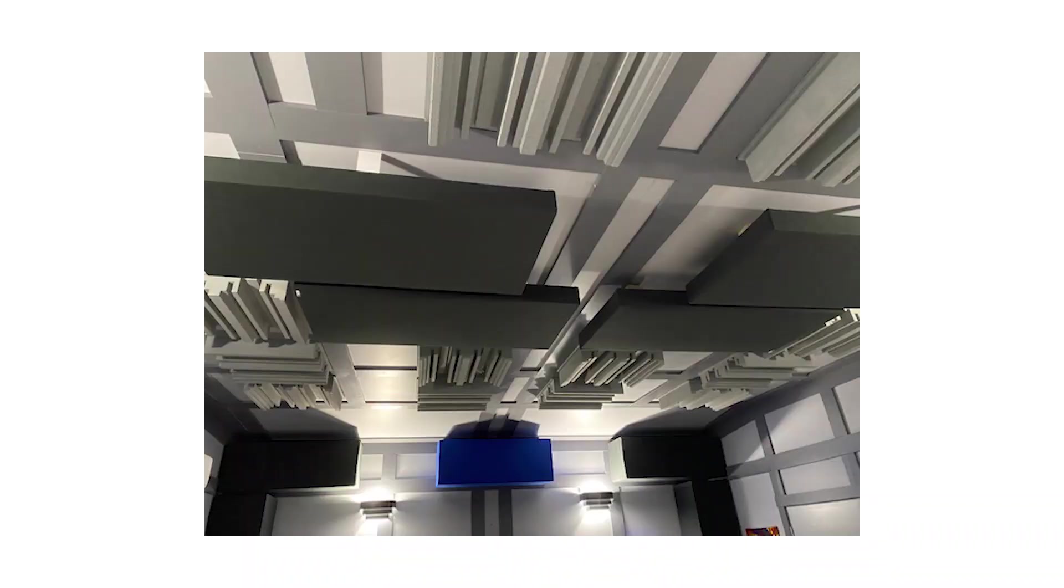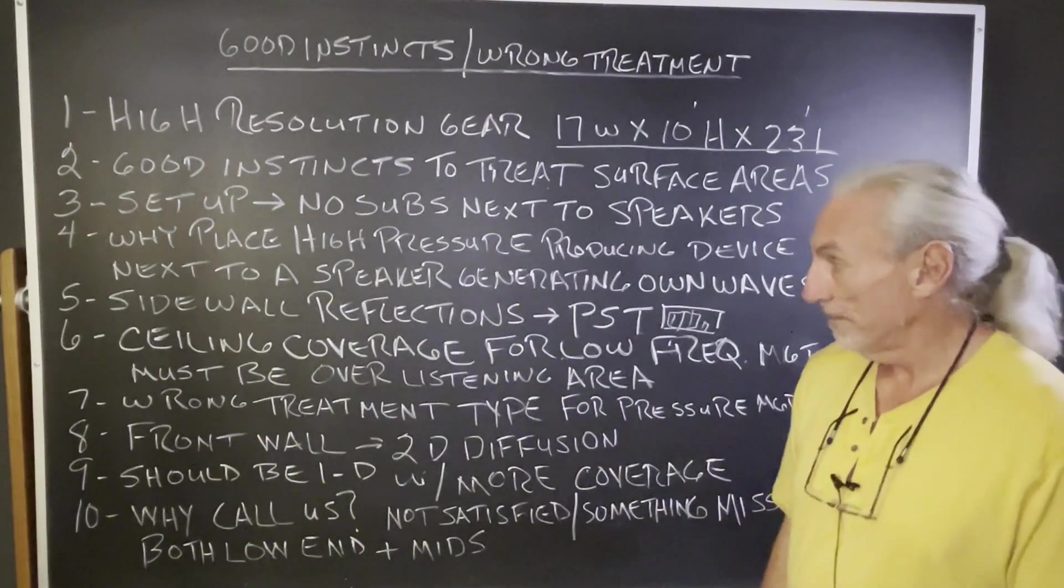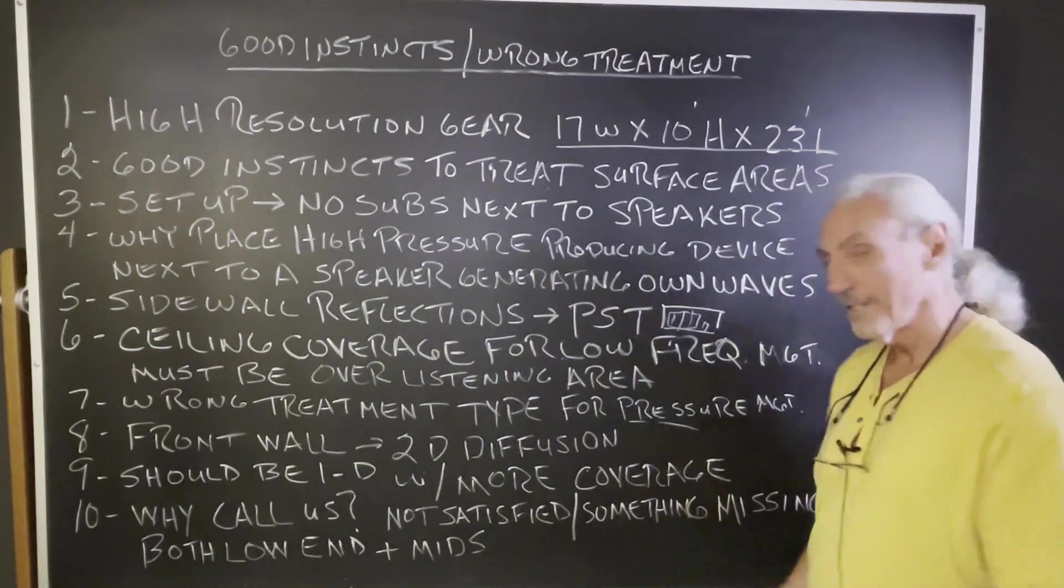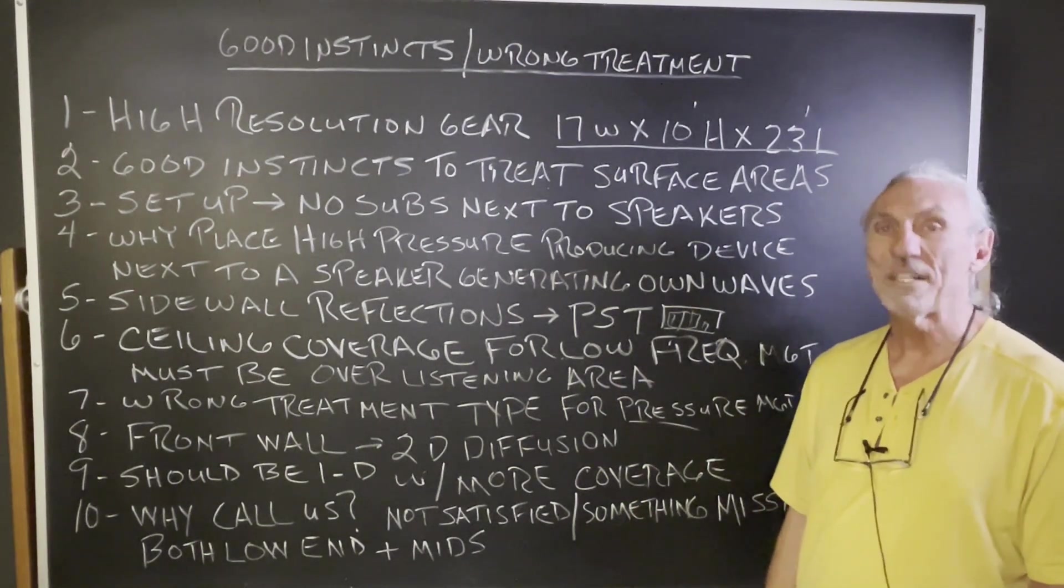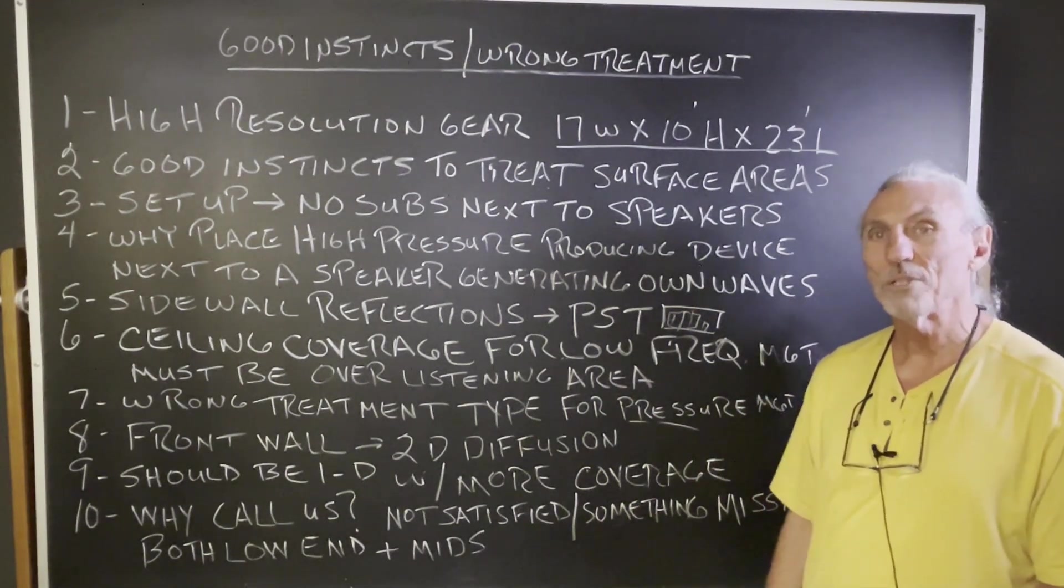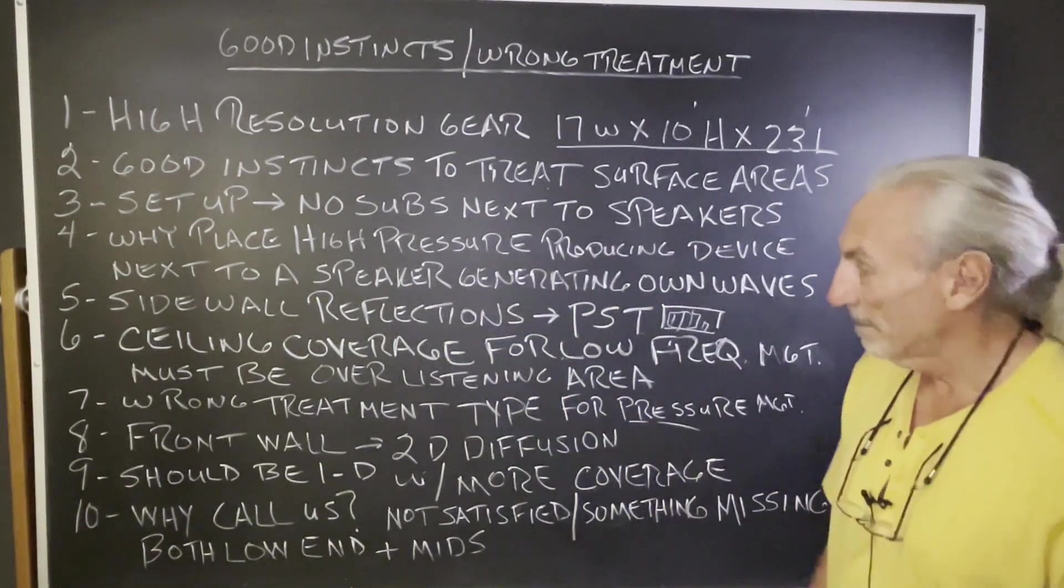Ceiling treatment. Corners along the room boundary surfaces, but the biggest place, the best place to put low frequency management is right over the listening position. You want to manage the pressure over the position that you're listening to music at. I don't know what's in these units, but I'm assuming they're full of building insulation. I think it's a safe assumption. It's the wrong treatment type for pressure. It's not going to manage pressure.